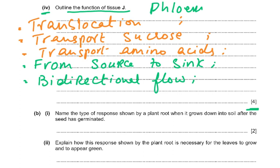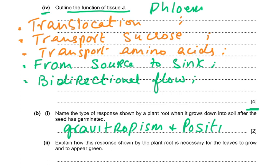Part B question 1: name the type of response shown by a plant root where it grows down into the soil after the seed has germinated. That is called gravitropism — specifically positive gravitropism. You get one mark for gravitropism and the second mark for the word positive, so positive gravitropism gives you both marks.